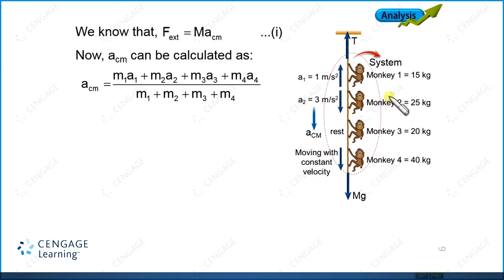This second monkey, 25 kg and 3 meter per second square downward, so this is minus 3. This monkey is at rest, so A₃ equal to 0. And this monkey is also traveling downward direction with constant velocity, that means this acceleration is also equal to 0. So let us add the masses and substitute the value of the acceleration.